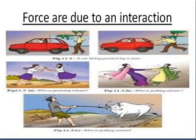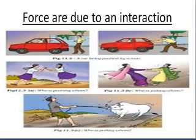Whenever we apply a force, there has to be an interaction. In the first picture, a car is standing and a man is standing there. Even if he tries to put his hand in the air and apply force, he will not be able to move the car. Only when he touches the car and puts the force will he be able to move it. So the first thing about forces is that you need to have interaction — you need to touch the thing on which you are going to apply the force.